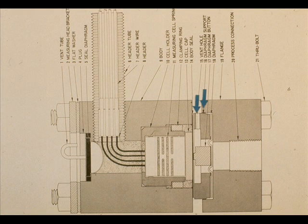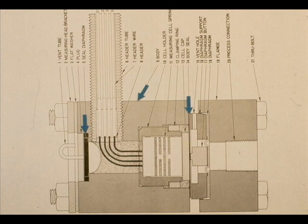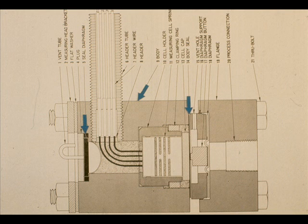The diaphragm support 16 has a vent hole 15, which allows the space between the measuring cell and body to breathe. Otherwise, there would be a buildup of back pressure in this space.